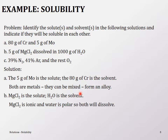For part b: 5 grams of magnesium chloride and 1000 grams of water. Water is the solvent (larger quantity) and magnesium chloride is the solute. Magnesium chloride is ionic and water is polar, so the intermolecular forces at play are ion-dipole and dipole-dipole. Water has dipole forces; magnesium chloride experiences ion-dipole forces in water.